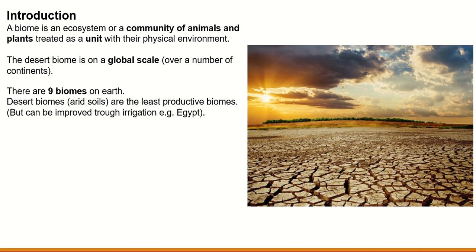Desert biomes have what are called arid soils. Arid just means extremely dry and lacking moisture. That's a picture of an arid soil — you can see how dry it is, it's become cracked and damaged. Desert biomes, as you could probably guess yourself, are the least productive biomes, and you can see why — they're just so unbelievably dry with no moisture. It would be very difficult for any plant or animal to survive here.